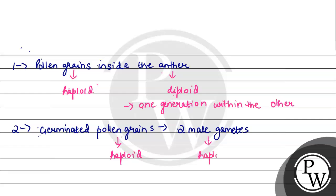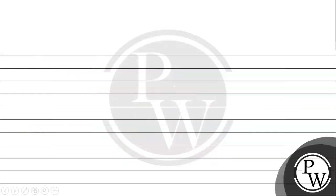Option three: seed inside the fruit. The seed is present inside the fruit. However, this option does not represent two generations one within the other, so option three does not qualify.